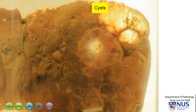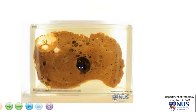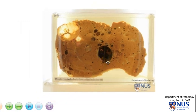Some of these cysts are right up against the capsular surface. This is an example of polycystic liver disease.